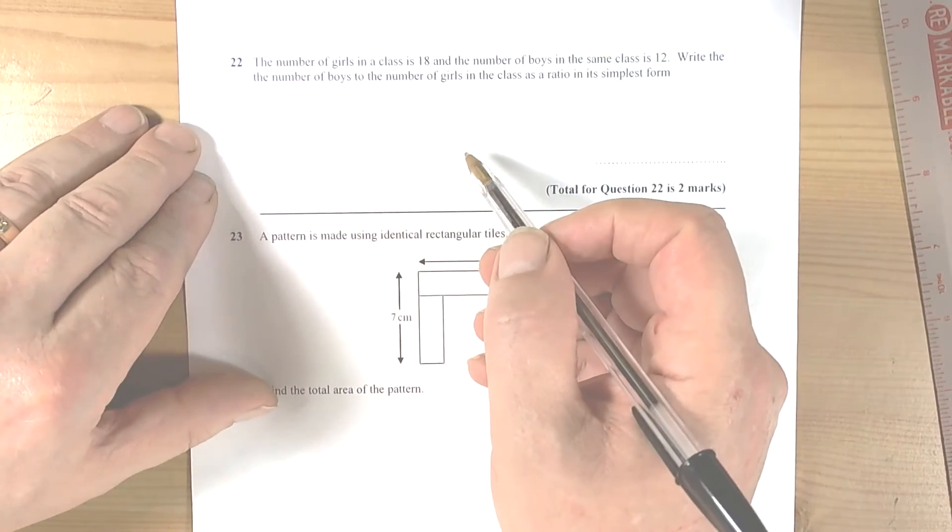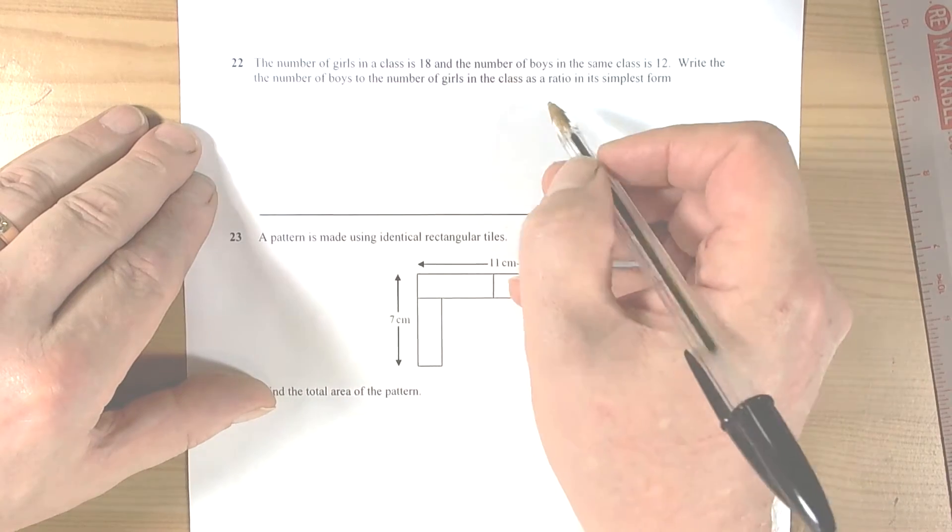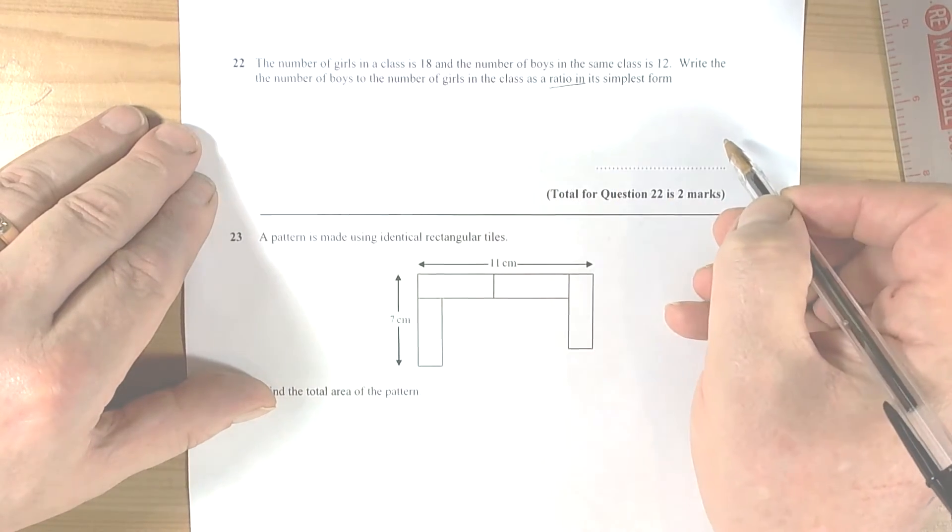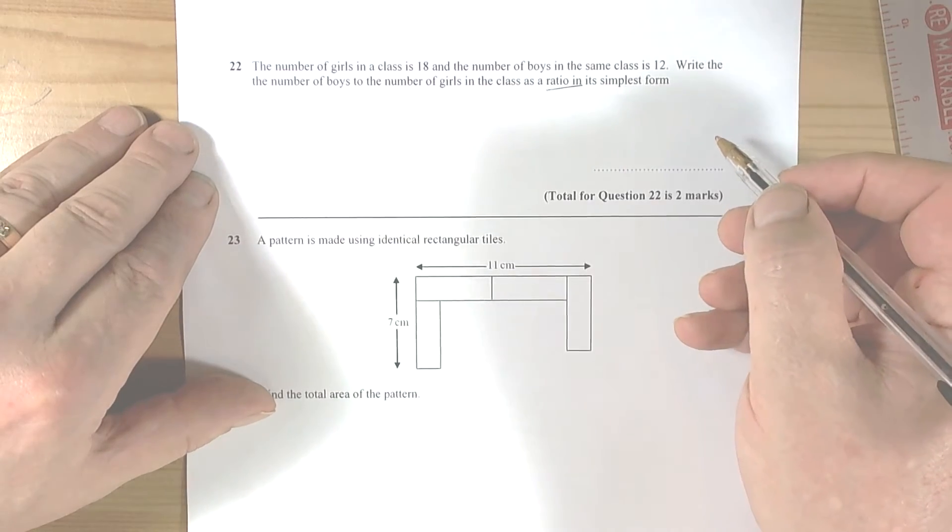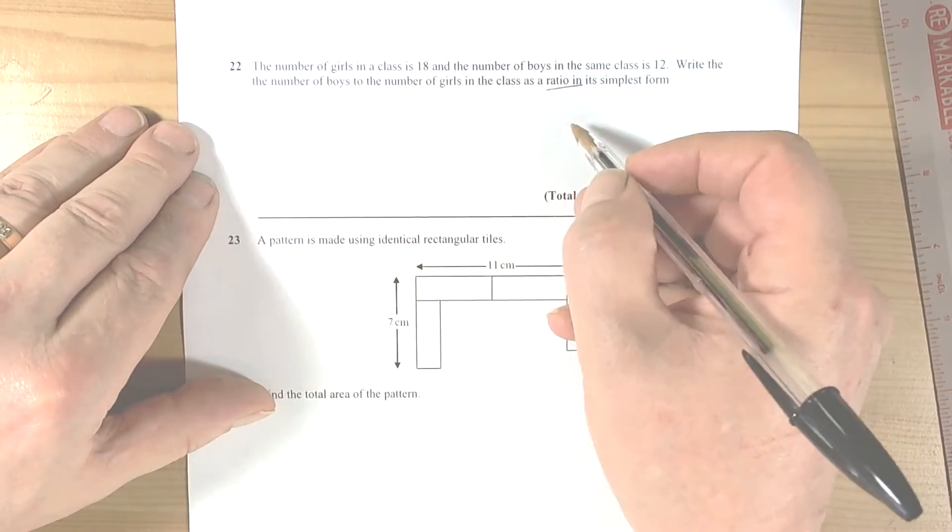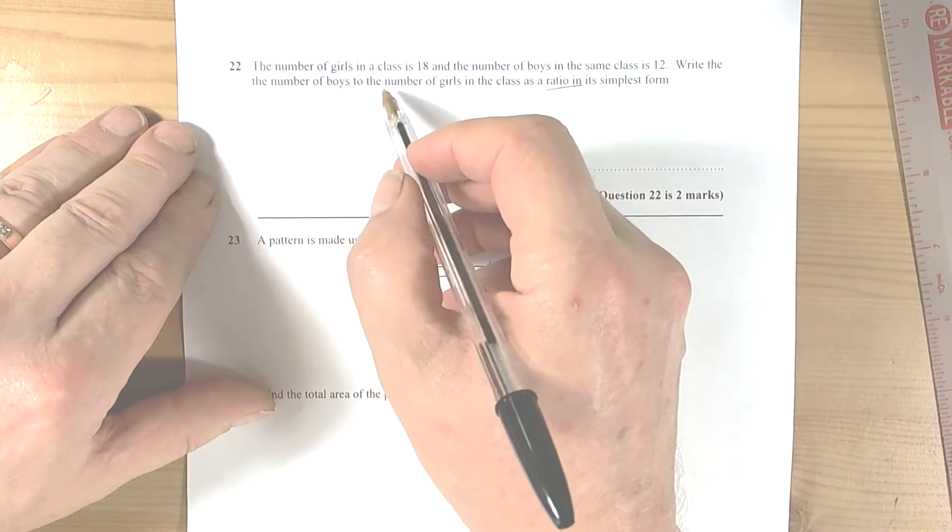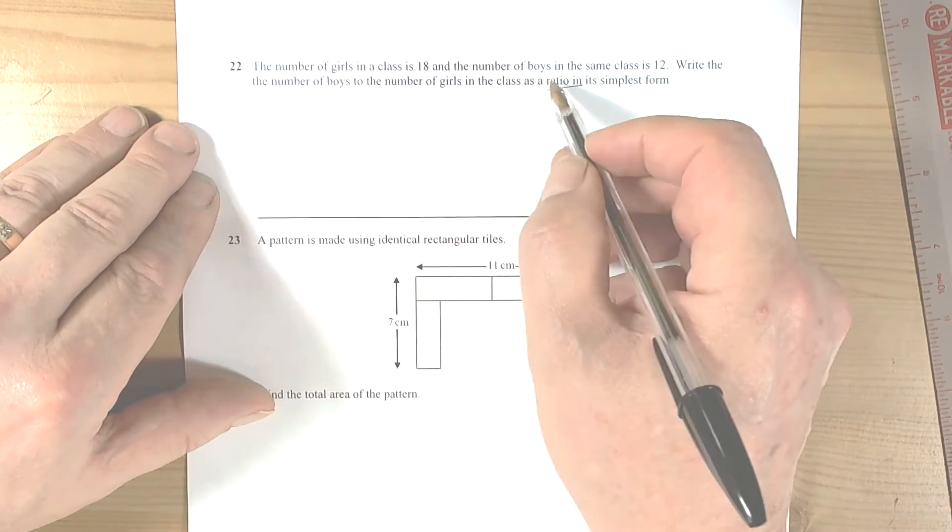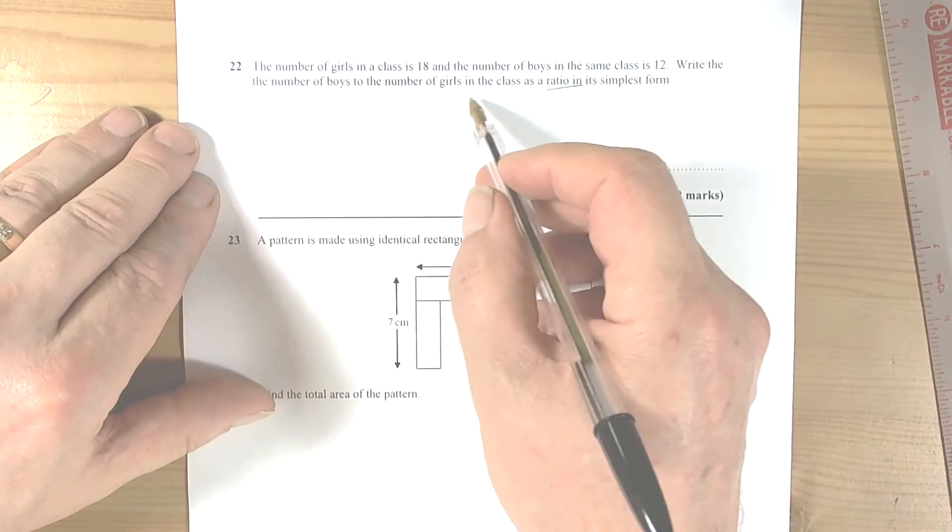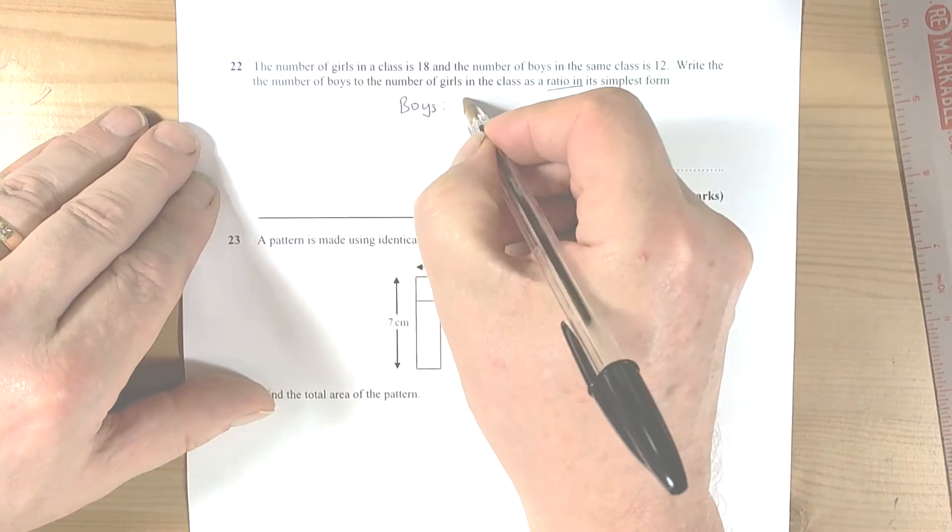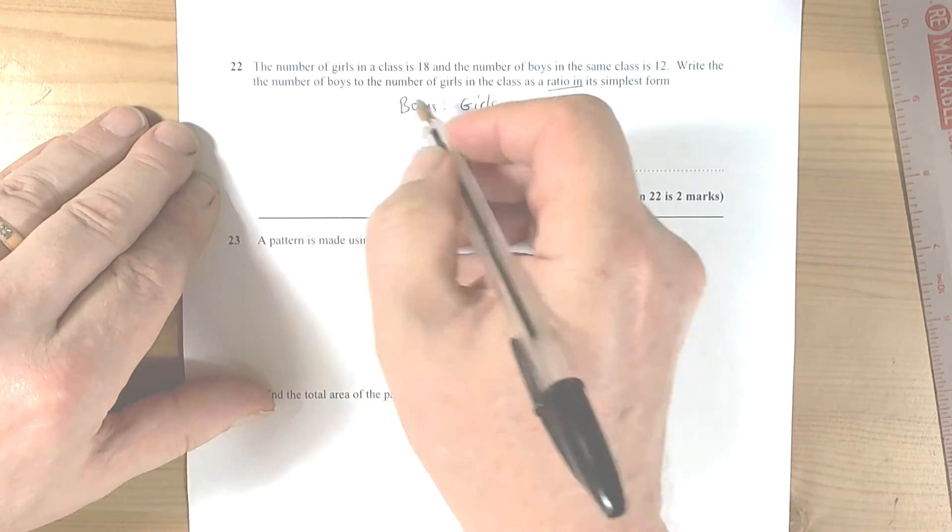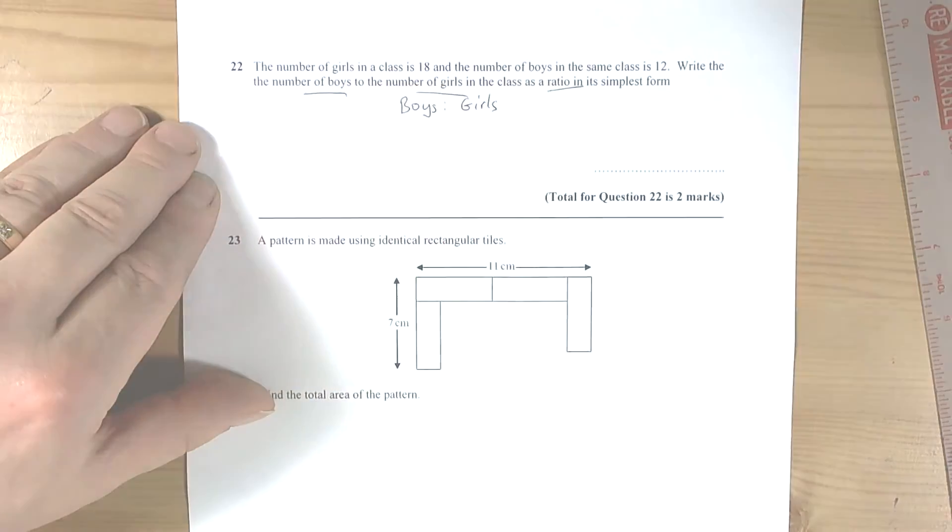We've got another question here that involves ratio and it says you have to write it as simple as possible. So usual advice when you have a ratio question, write it with the headings. So it's got a class of girls and boys and he wants the number of boys to the number of girls, so it's boys first to the number of girls. So again, watch the language carefully and make sure it's in the right order for a ratio.